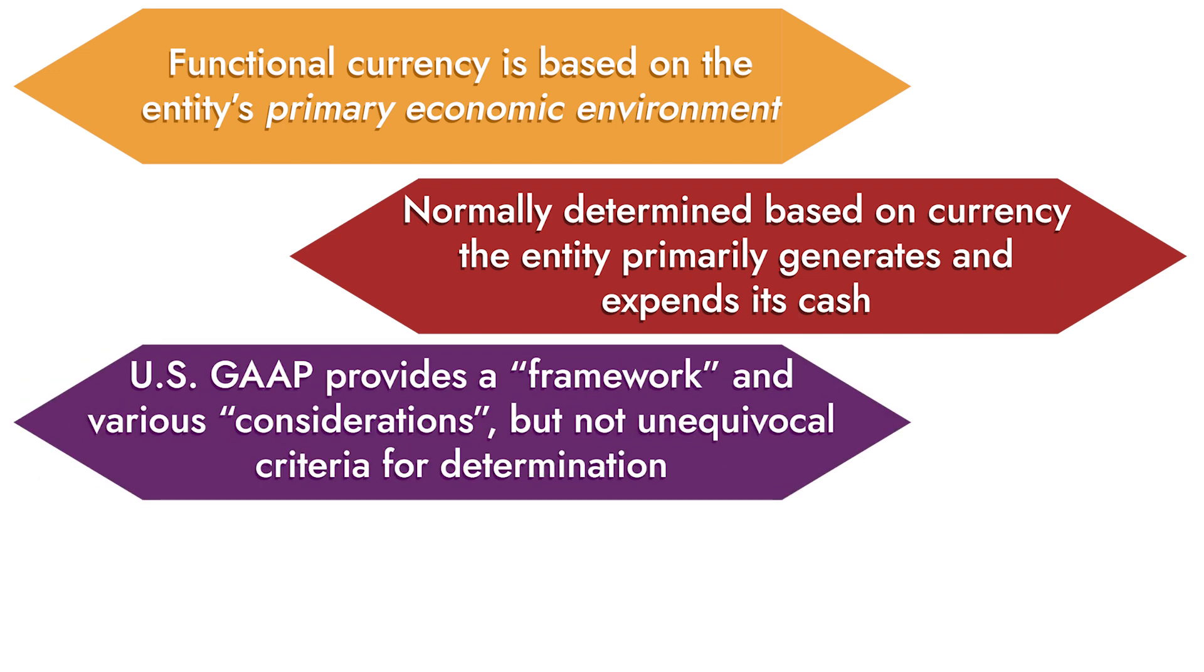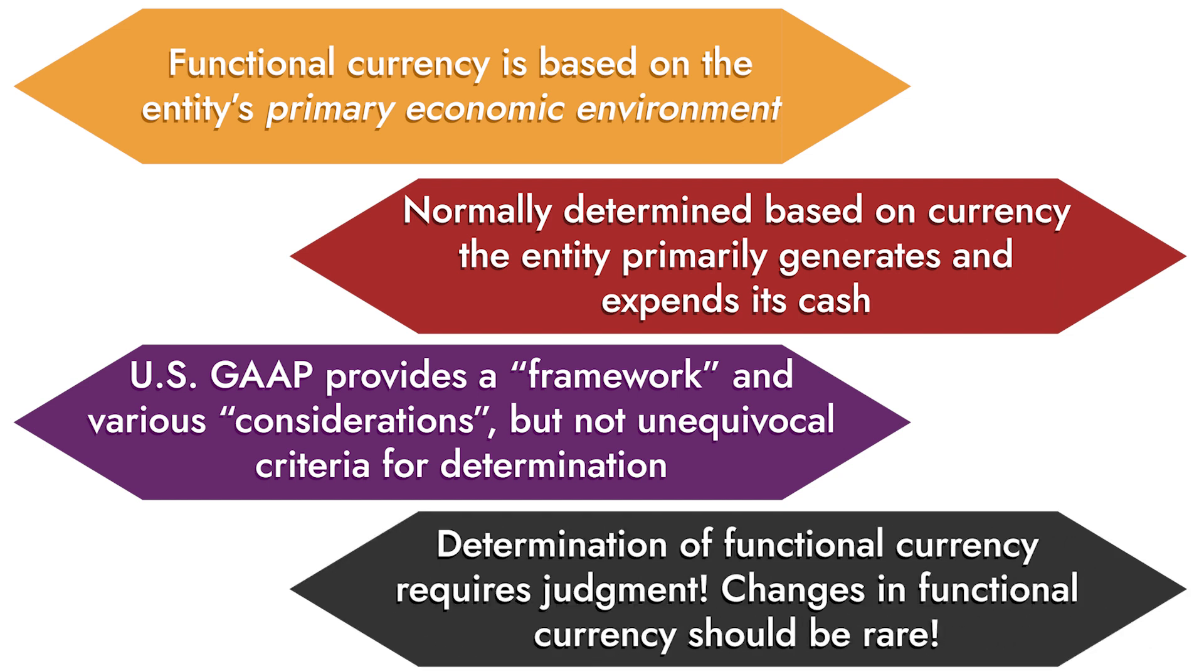ASC Topic 830 provides a framework on how to make this determination, but no unequivocal criteria for determination. That means there's a lot of judgment involved in this decision.